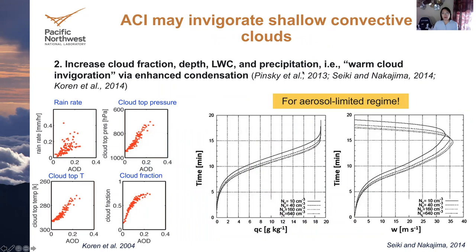But also in clean and humid regions, ACI is found to invigorate shallow convective clouds through warm cloud invigoration, which occurs because of enhanced condensation surface area and reduced supersaturation due to more droplets and enhanced droplet surface area. This effect is very significant for clean conditions.